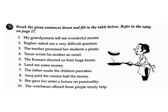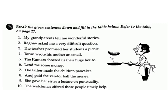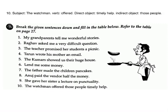9. She gave her sister a lecture on punctuality. Answer — subject: she; verb: gave; direct object: a lecture on punctuality; indirect object: her sister. 10. The watchman offered those people timely help. Answer — subject: the watchman; verb: offered; direct object: timely help; indirect object: those people.